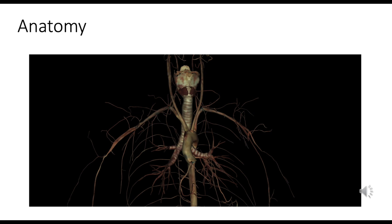The aortic arch curves over the left main stem bronchus, and the descending thoracic aorta continues just to the left of the vertebral column. This anatomical relationship is important, as the positioning of the aorta relative to the bronchi can have clinical implications especially in congenital anomalies, aortic aneurysms or dissections, or in procedures like intubation.